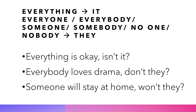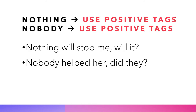'Everything' becomes 'it,' while 'everyone,' 'everybody,' 'someone,' 'somebody,' 'no one,' and 'nobody' become 'they' in the tag. For example: 'Everything is okay, isn't it?' 'Everybody loves drama, don't they?' 'Someone will stay at home, won't they?' 'Nothing and nobody' use positive tags: 'Nothing will stop me, will it?' 'Nobody helped her, did they?'